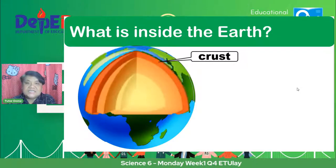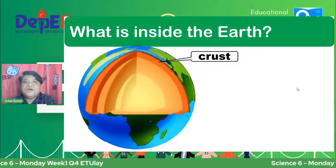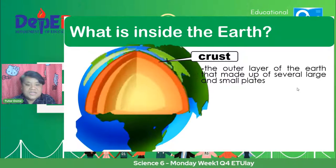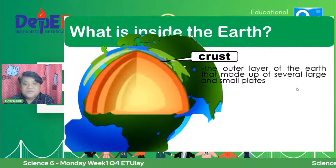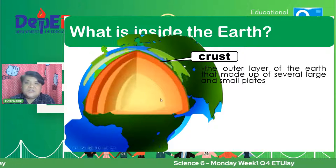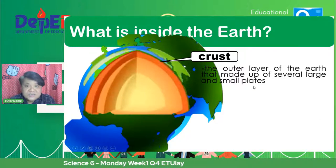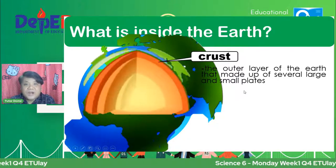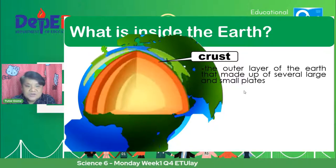Yung makikita natin sa ibabaw ng Earth, yung kulay green, kulay blue, and other parts — that is the crust. The crust is the outer layer of the Earth, made up of several large and small plates. So when we say plates, ito yung mga continents, yung mountains, yung rocks, everything na makikita natin sa outer part of the Earth. Crust ang tawag natin siya.